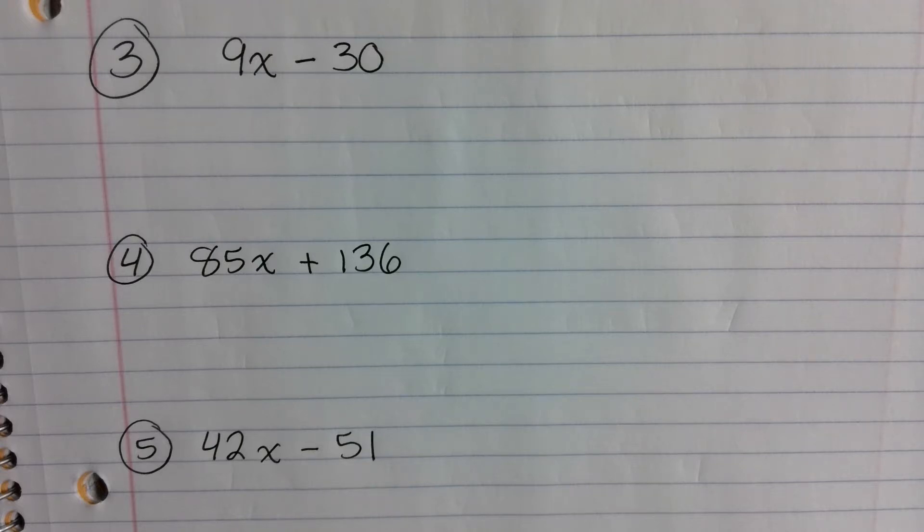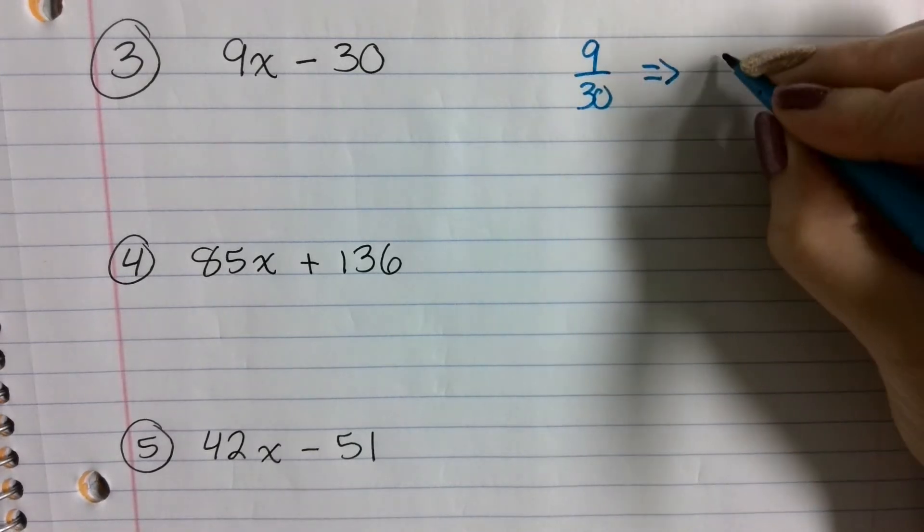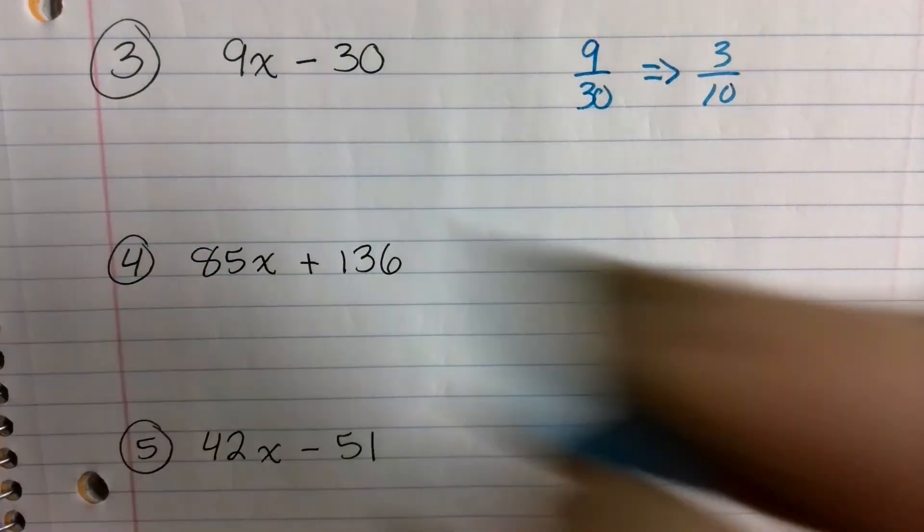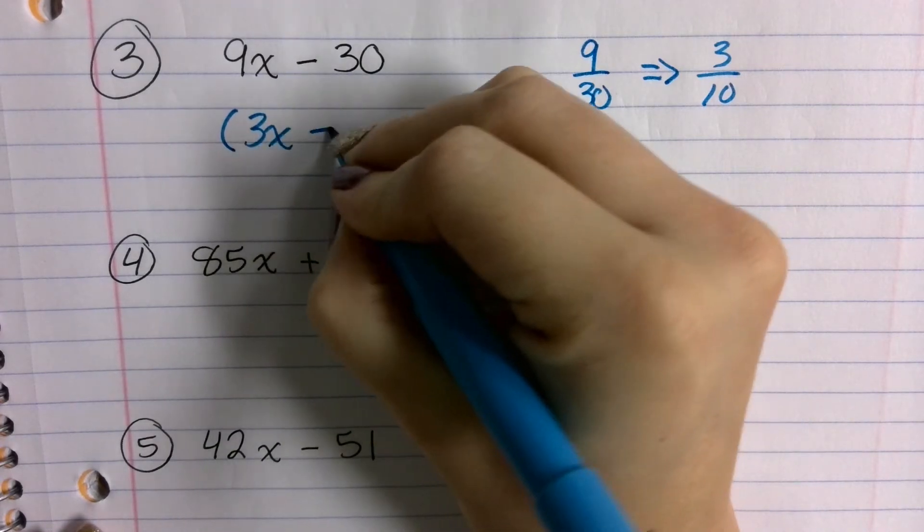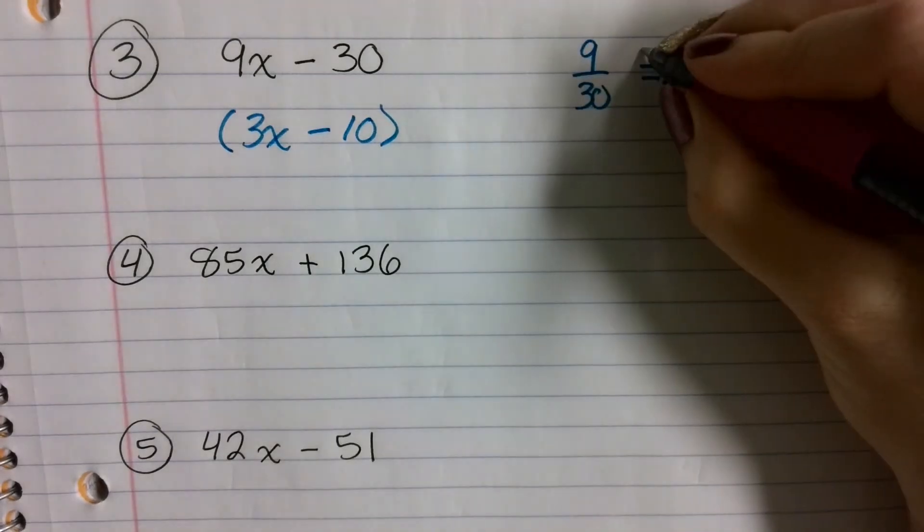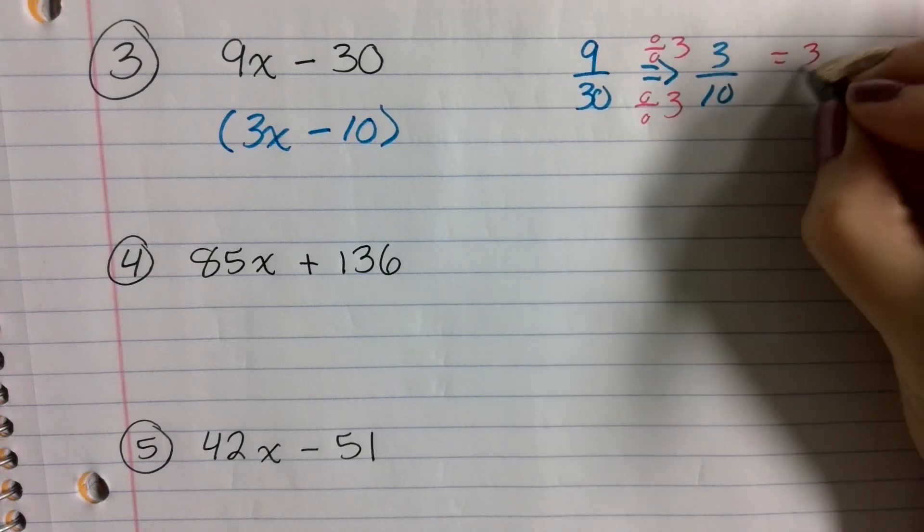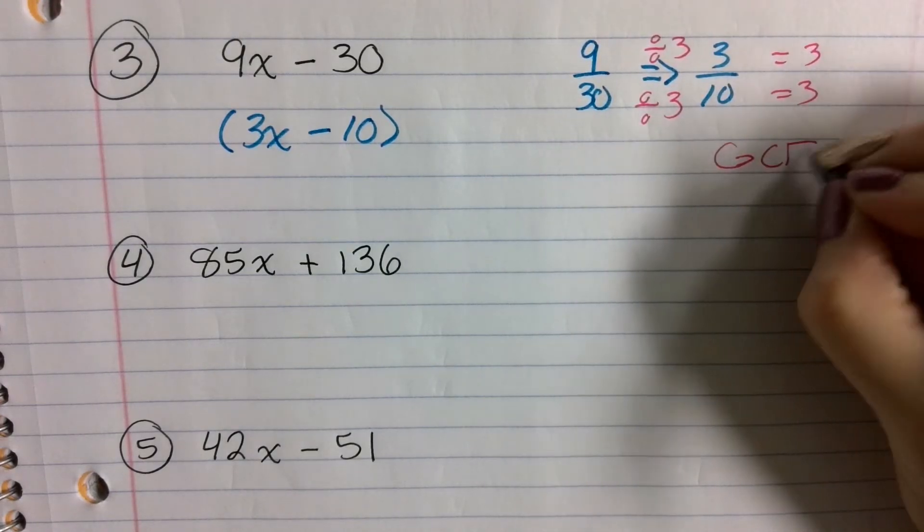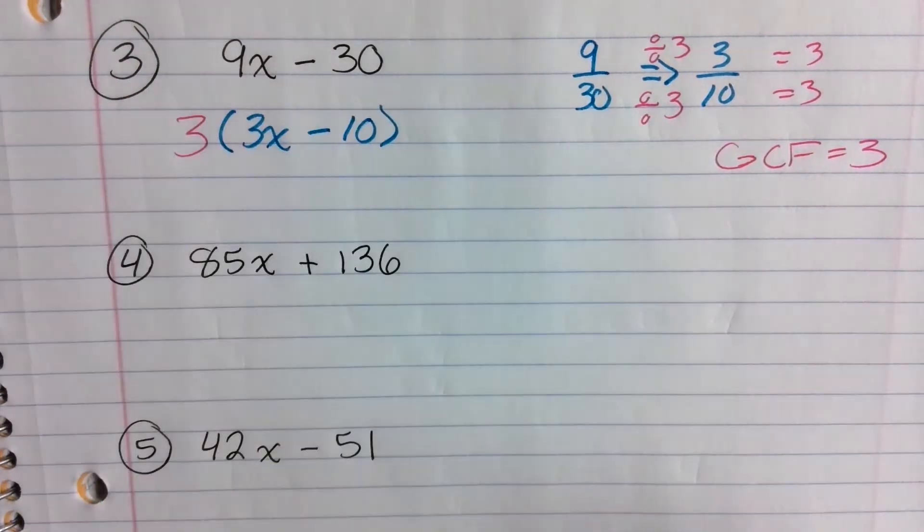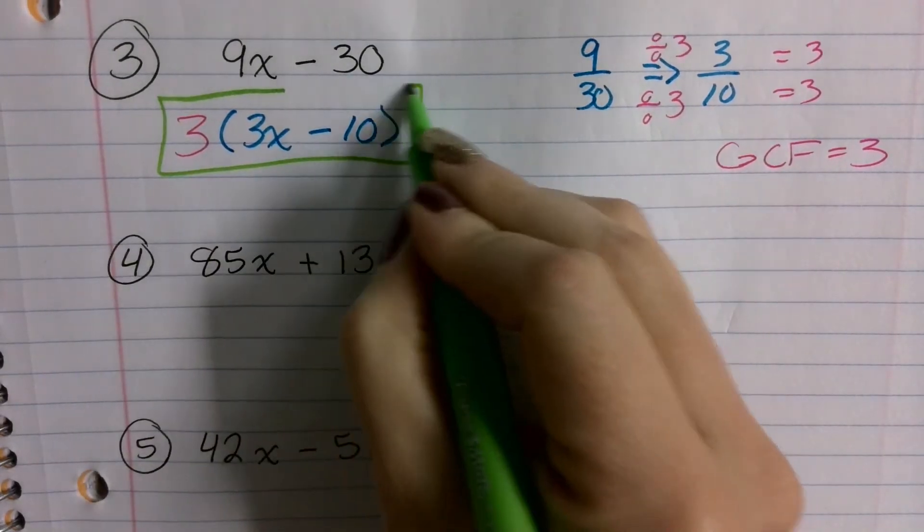Mia? Very good. 3 times 3x minus 10. So if we set this up, we have 9 over 30. 9 over 30 simplifies down to 3 over 10. So we know the expression becomes 3x minus 10. When we divided, we did 9 divided by 3 and we did 30 divided by 10. Both of them would come out to 3. So there's our greatest common factor. Our greatest common factor is 3. So that 3 comes on the outside. So this is your final answer. 3 times 3x minus 10.